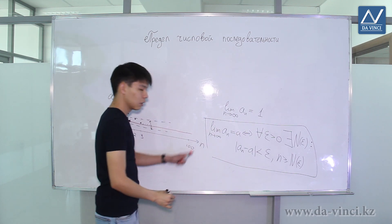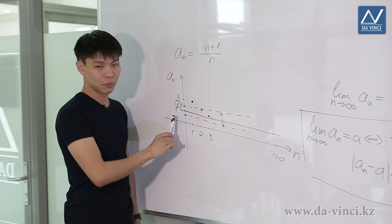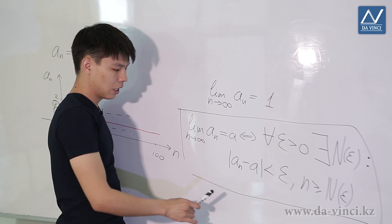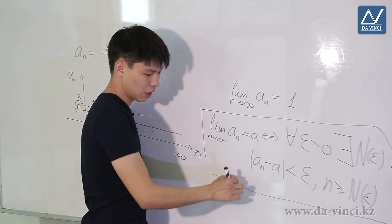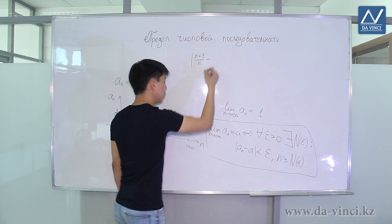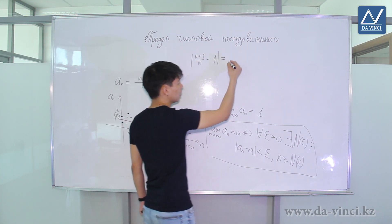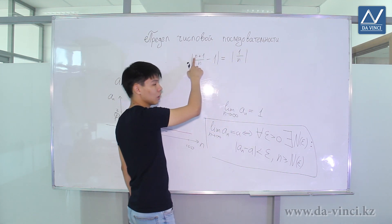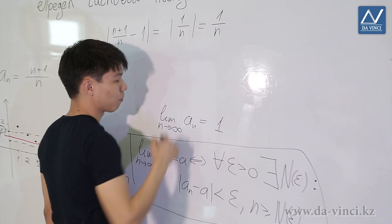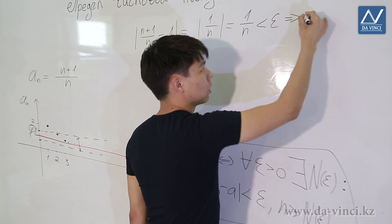Let's check this definition for our limit. We already understand that 1 should act as the limit. We need to verify that for any positive epsilon, there exists some number from which this relation holds. We write |aN − A|, which is |(N+1)/N − 1|. Simplifying with a common denominator gives |1/N|. Since N is a natural number, this is positive and equals 1/N. So 1/N must be less than an arbitrary positive epsilon, meaning N must be greater than 1/epsilon.